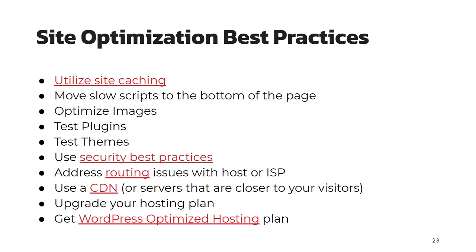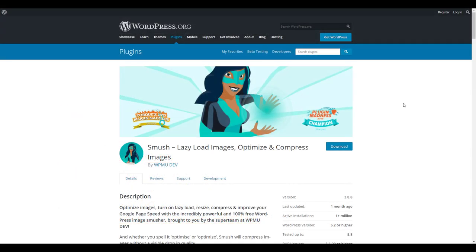Caching will often solve a lot of site problems. If your host or servers include caching, you can often just use a plugin to manage it. Moving slow scripts down to the bottom of a page can allow the essential items to load first and the scripts to load after — this can often include ads or tracking tools. Optimizing images means making them no larger than is necessary. For example, if an image is displaying in a small box on your site, it should be minimized to the specific size needed instead of using a massive 10 megabyte file. There are plugins available to help you do this.